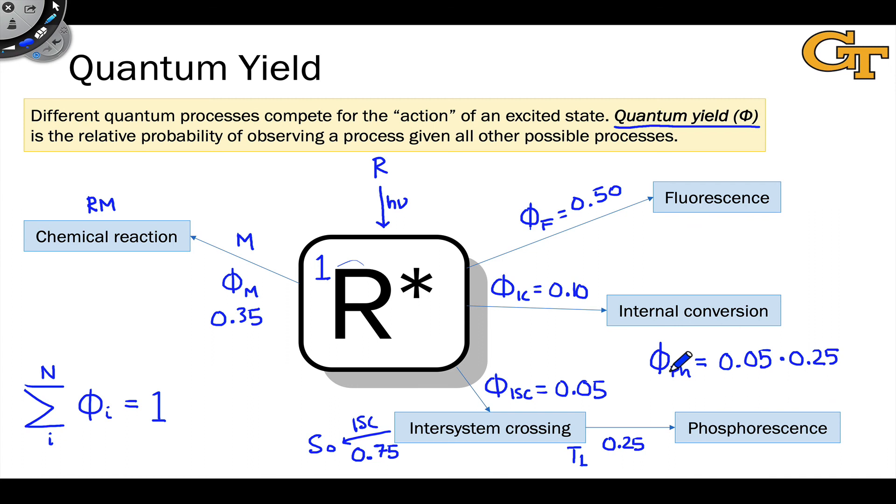The efficiency of phosphorescence with respect to the T1 state is 0.25. And we're going to multiply the 0.05 probability of inter-system crossing in the first place by the 0.25 probability of the T1 state undergoing phosphorescence. So the overall quantum yield of phosphorescence is the product of the efficiencies of each of the individual steps or the quantum yields of the individual steps. In this sense, quantum yield is multiplicative. The probabilities of individual steps within a multi-step process are multiplied to get the overall quantum yield for the entire composite process.